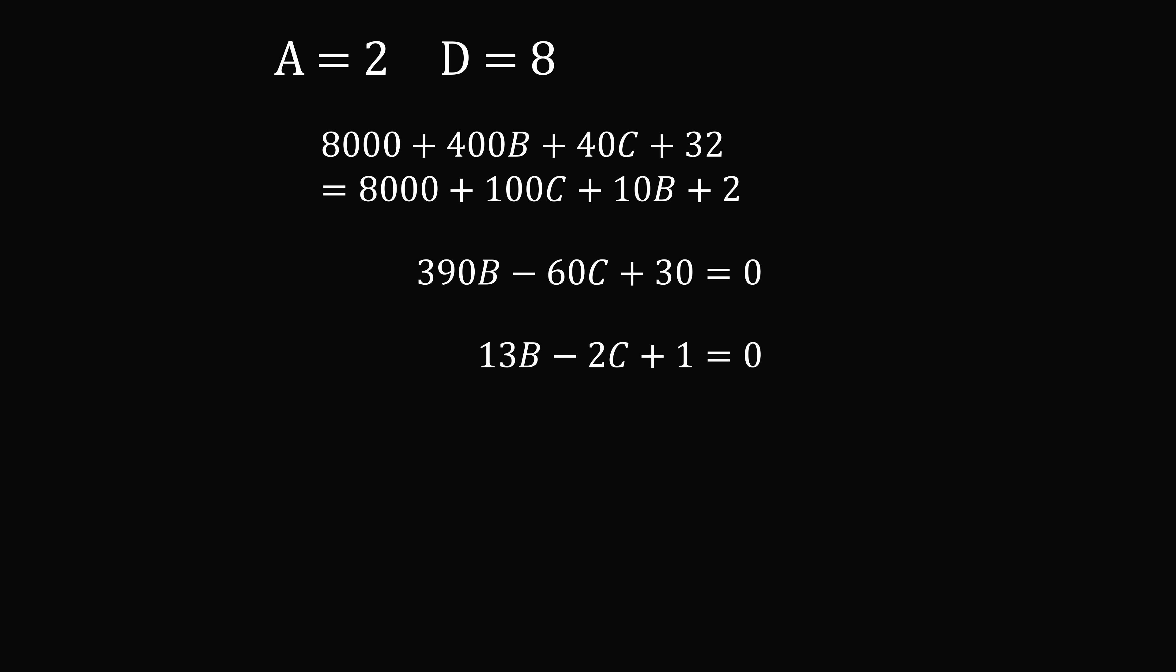Now we might as well solve for B. So we get B is equal to 2C minus 1 all over 13. So we know that 2C minus 1 has to be divisible by 13.